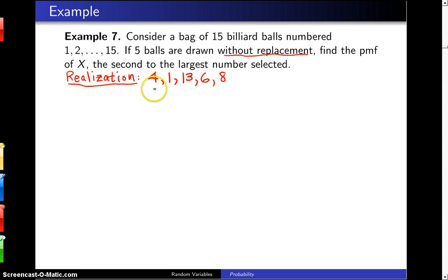I'm going to rewrite those ordering them because order seems to be important here. They are 1, 4, 6, 8, and 13. And the random variable X here is the second to the largest number selected. So in this case, the random variable X assumes the value 8.